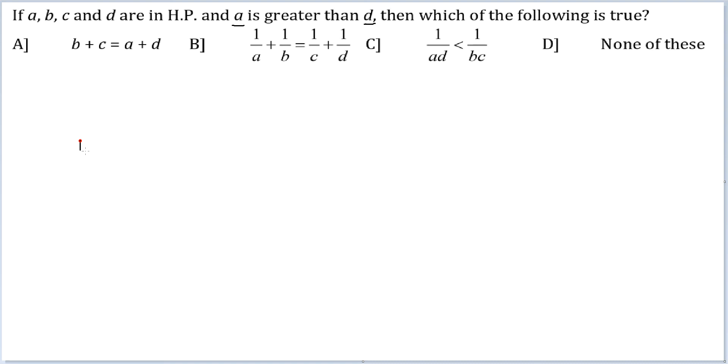Four terms in AP will be 1, 2, 3, 4. So in HP, I would have 1, 0.5 or 1 by 2, 1 by 3 and 1 by 4. This is A, this is B, this is C and this is D.